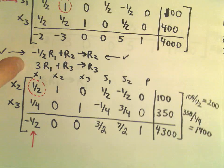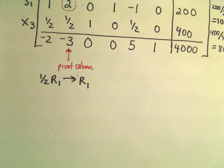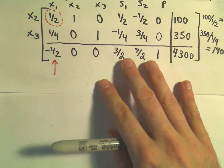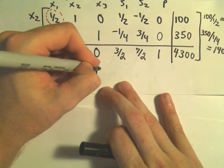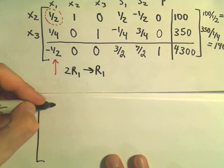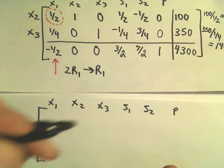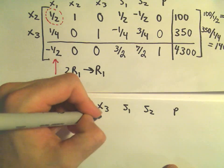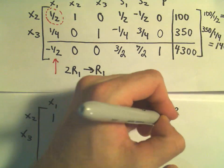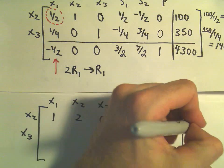This one-half is our pivot element, but first we want to turn that into a 1. That means we're going to multiply our first row by 2. So I take 2 times row 1 as my new row 1. We've got X1, X2, X3, S1, S2, P, with X2 and X3 on the left. Multiplying by 2 gives us 1, 2, 0, 1, negative 1, 0, and 200.